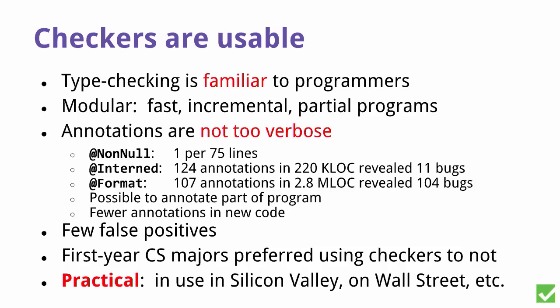Type systems can also help compilers and other tools make systems run faster. Every tool has drawbacks: one negative is you have to write the types, though typically not too many — usually less than Java generics — and we have type inference tools that automatically determine these. Another drawback is false positives are possible. The system might say it can't prove this code is correct, even when it's correct for some subtle reason, requiring you to suppress the warning.